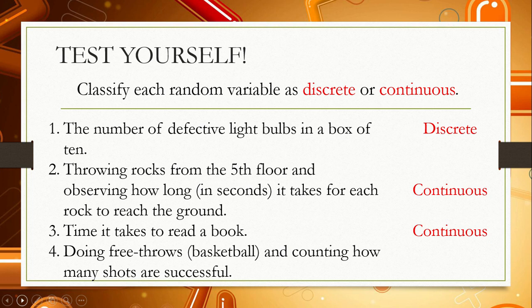Number 4: doing free throws in basketball and counting how many shots are successful. From the word 'counting' — discrete random variable is countable while continuous random variable is uncountable — so number 4 is a discrete random variable.